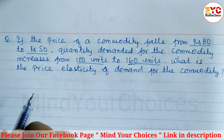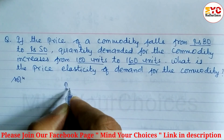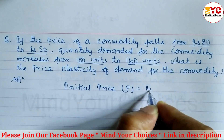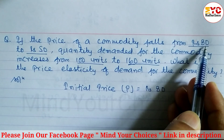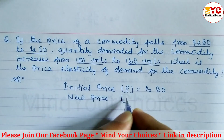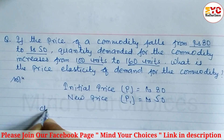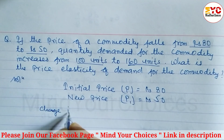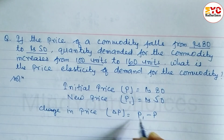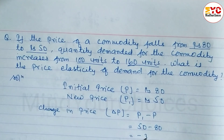What is the price elasticity of demand? We have to find out price elasticity of demand. Initial price P is equal to Rs. 80, and new price P1 is equal to Rs. 50. First we find the change in price: ΔP = P1 minus P = 50 minus 80 = minus 30.